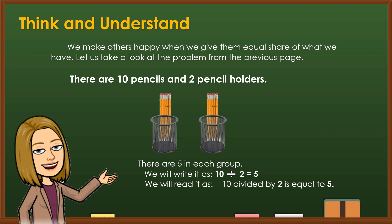There are 10 pencils and 2 pencil holders. There are 5 in each row. We will write it as 10 divided by 2 is equal to 5. We will read it as 10 divided by 2 is equal to 5.